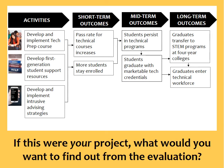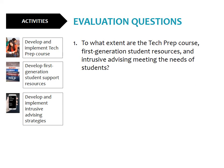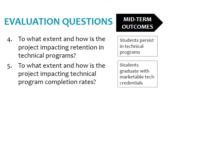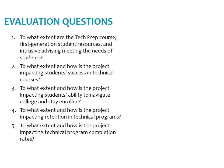Now that you can see this project mapped out, you may want to pause this video and think about what questions you think the project evaluation should address. To make sure the project is on track to make a difference for students, the first question should focus on the project's design and implementation: To what extent are the Tech Prep course, first-generation student resources, and intrusive advising meeting the needs of students? Then we could move to the first level of outcomes — the extent to which the project is impacting students' success in technical courses (question two) and their ability to navigate college and stay enrolled (question three). Next, we could look at how the project is impacting student persistence in technical programs (question four) and program completion rates (question five). Given the short duration of this project — just three years — it would be premature to consider the long-term outcomes. So with this set of evaluation questions, we'd have five overarching questions addressing both project implementation and outcomes, using a mix of quantitative and qualitative data from multiple sources.